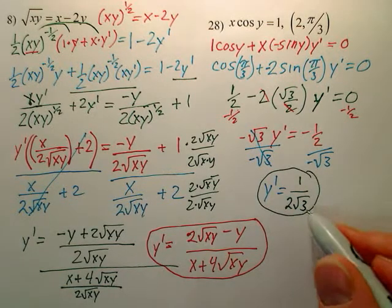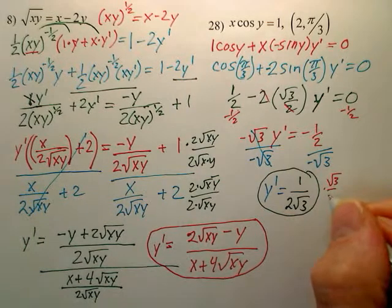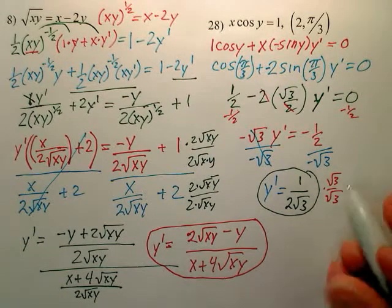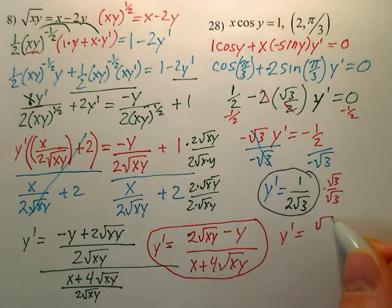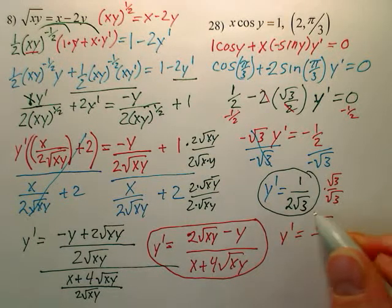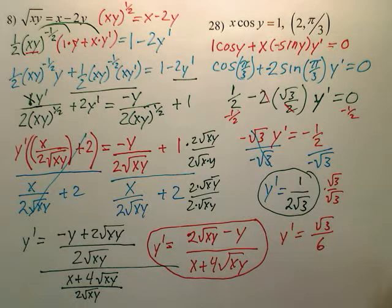But sometimes you don't want a denominator of a square root. So if you don't, do you understand you can multiply top and bottom by √3? And your answer could also be the √3 over, isn't that 3? 2 times 3 is 6. Could it also be that?